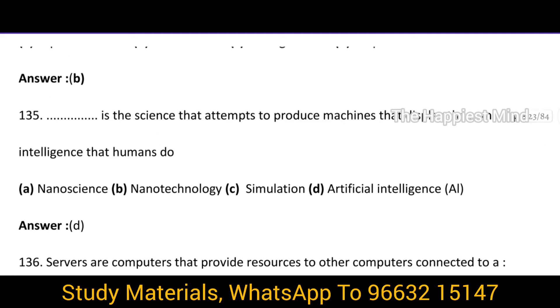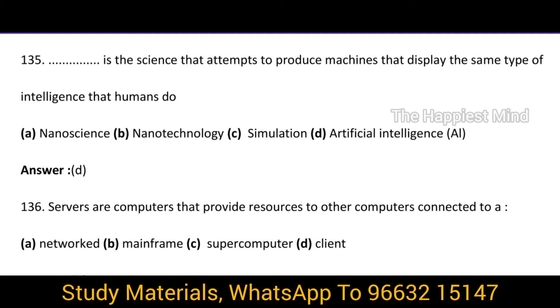Question 135: Which is the science that attempts to produce machines that display the same type of intelligence that humans do? It is option D: Artificial Intelligence, that is AI.